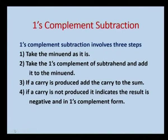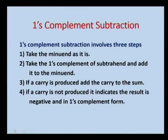First let us see what is 1's complement subtraction. In 1's complement subtraction, we have to follow certain steps. First, we have to take the minuend as it is, and the subtrahend should be converted to its 1's complement. Take the 1's complement of the subtrahend and add it to the minuend. If a carry is produced, add the carry to the sum. If a carry is not produced, the result is negative and it is in the 1's complement form.